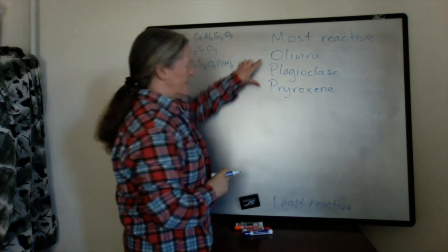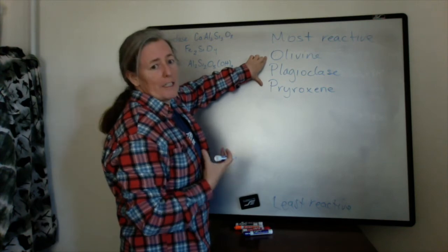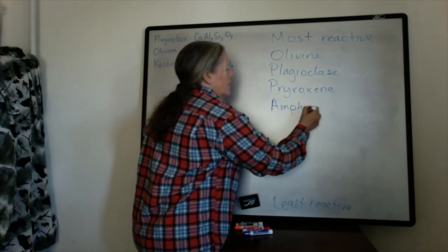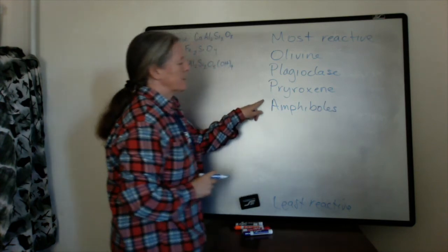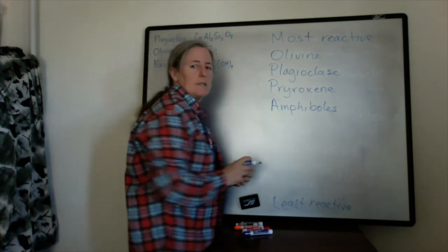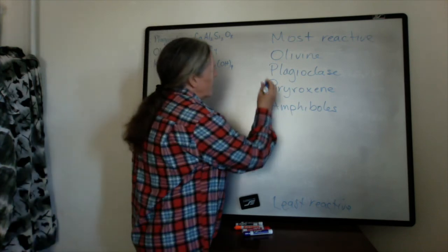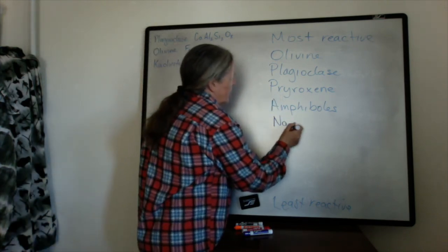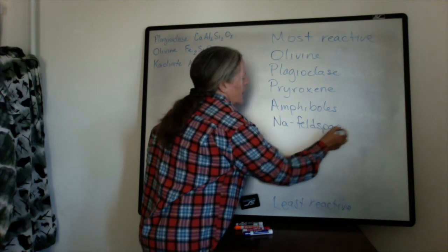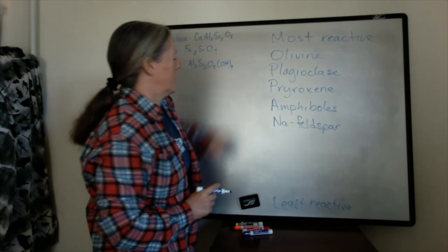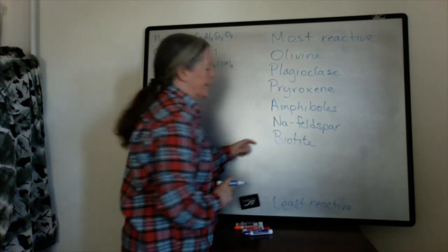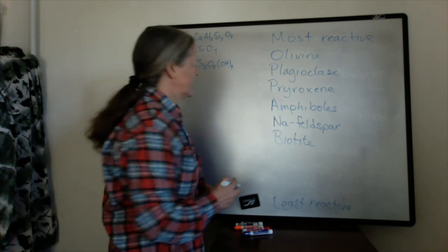Pyroxene, again, the same way. These mafic minerals are not very stable in the presence of water. Amphiboles are common metamorphic minerals, and it depends a lot on the details of their composition how stable they are. They already are a little bit hydrous, so they tend to be a little bit more stable. Sodium feldspars tend to again react with the water, but not as much as the calcium feldspars. Biotite is a mica with iron in it, and the oxidation of that iron in the presence of oxygen makes it a little less stable.